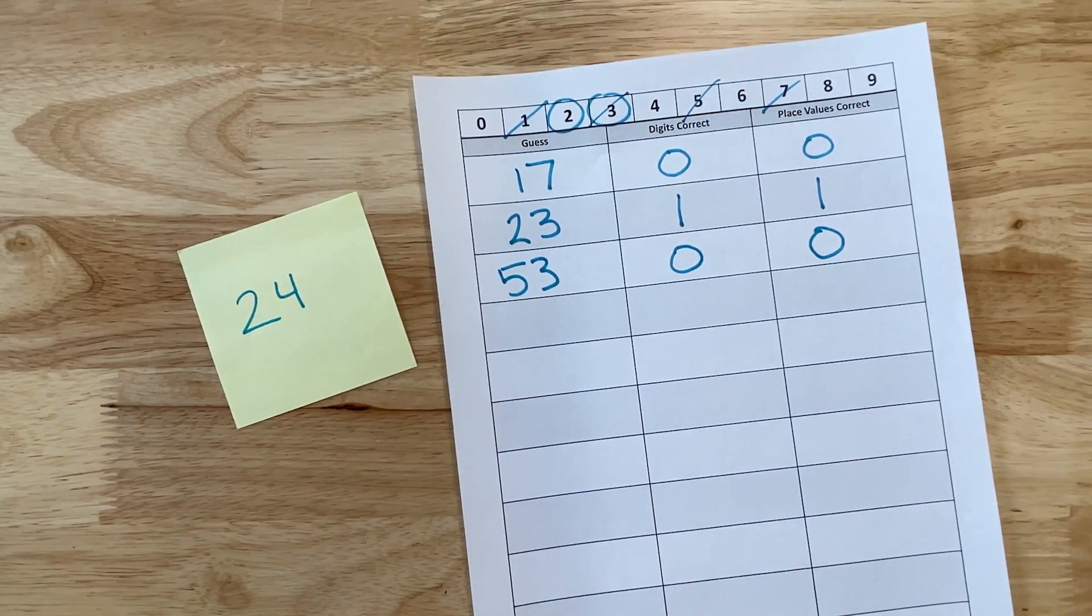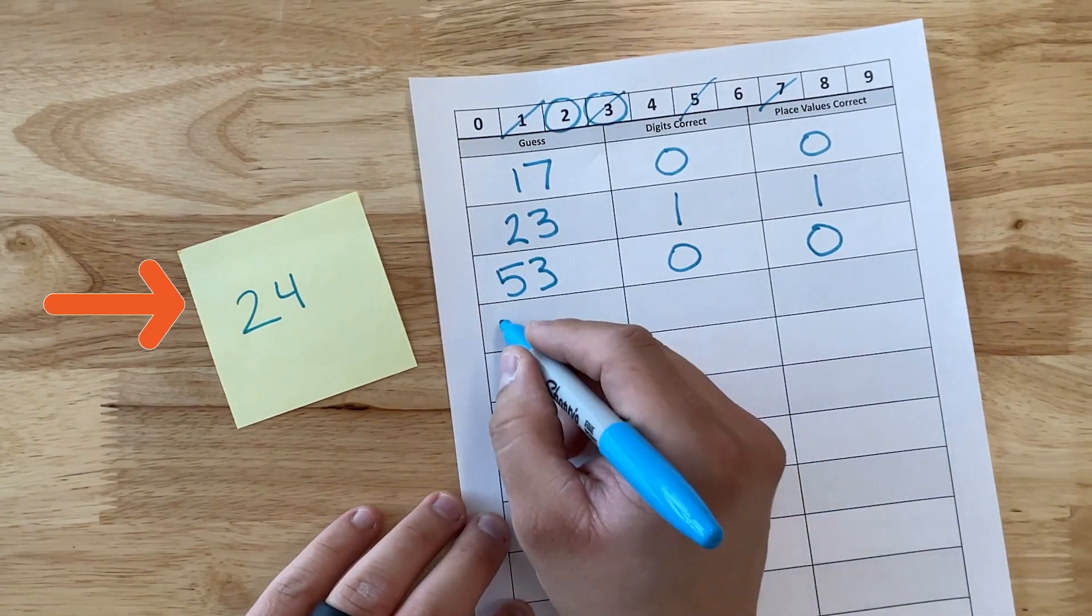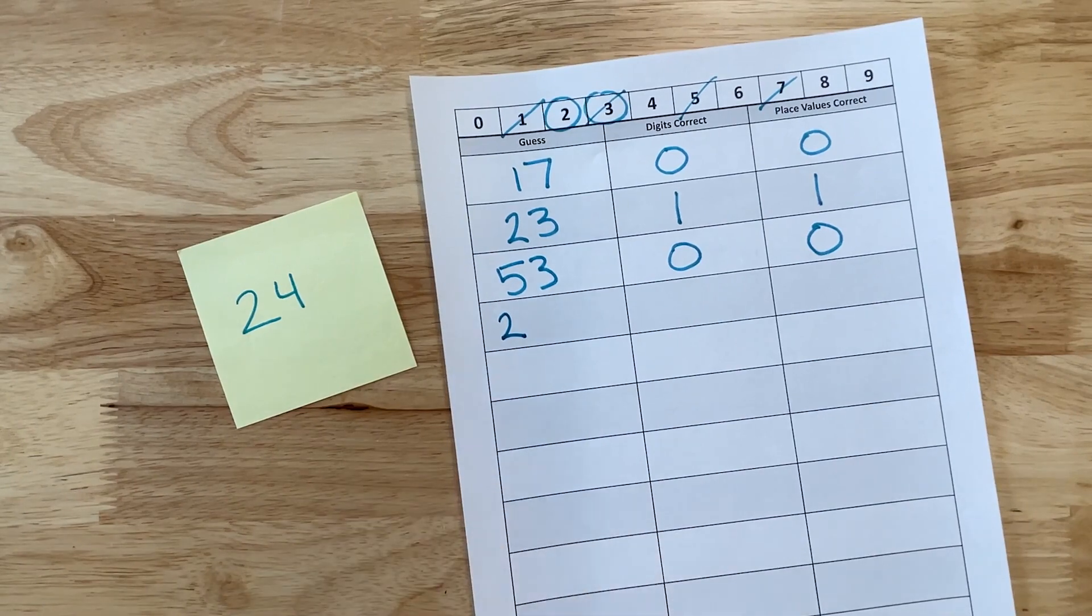Now you can have a conversation with the students and tell them which number is correct in the correct place value. It's two in the tens place. You can tell them your next guess should have a two in the tens place. A student can say 20.